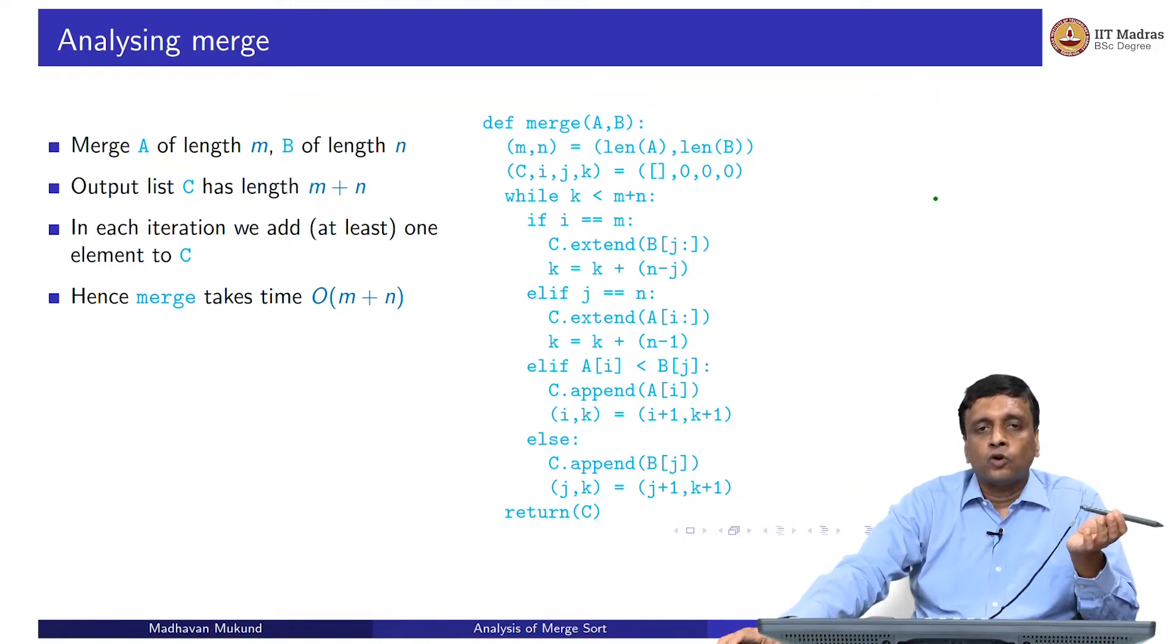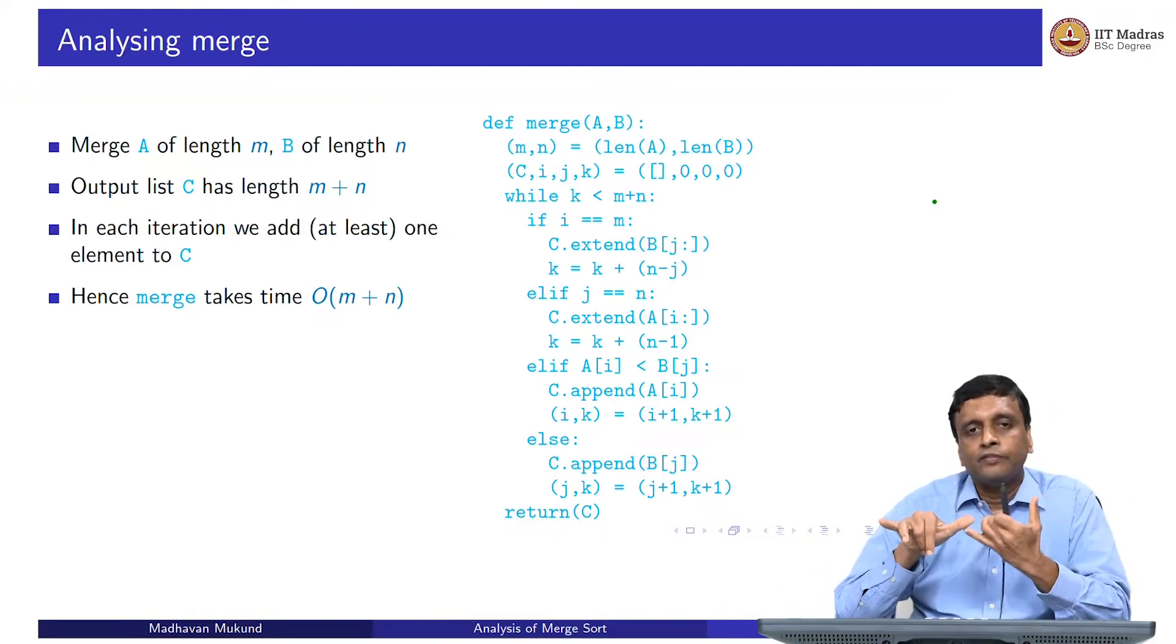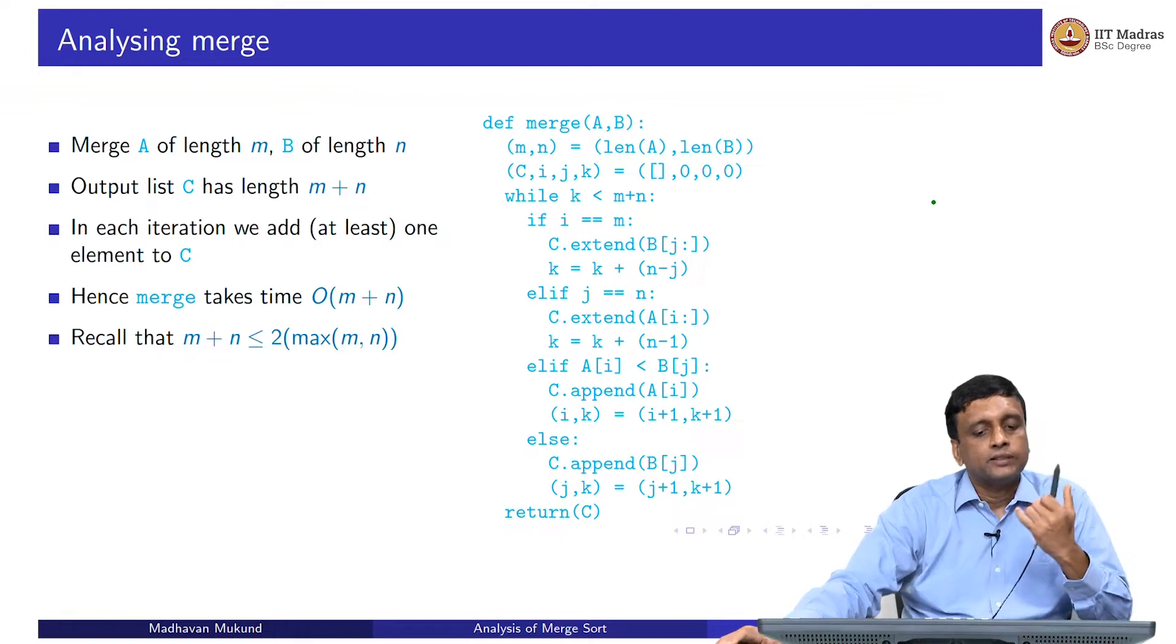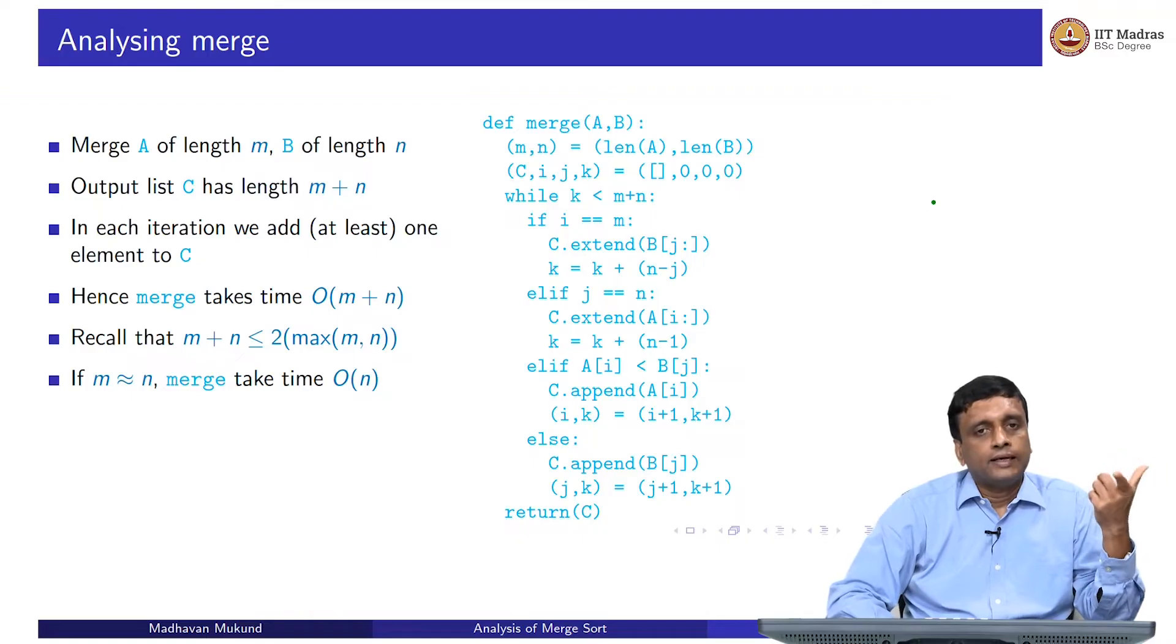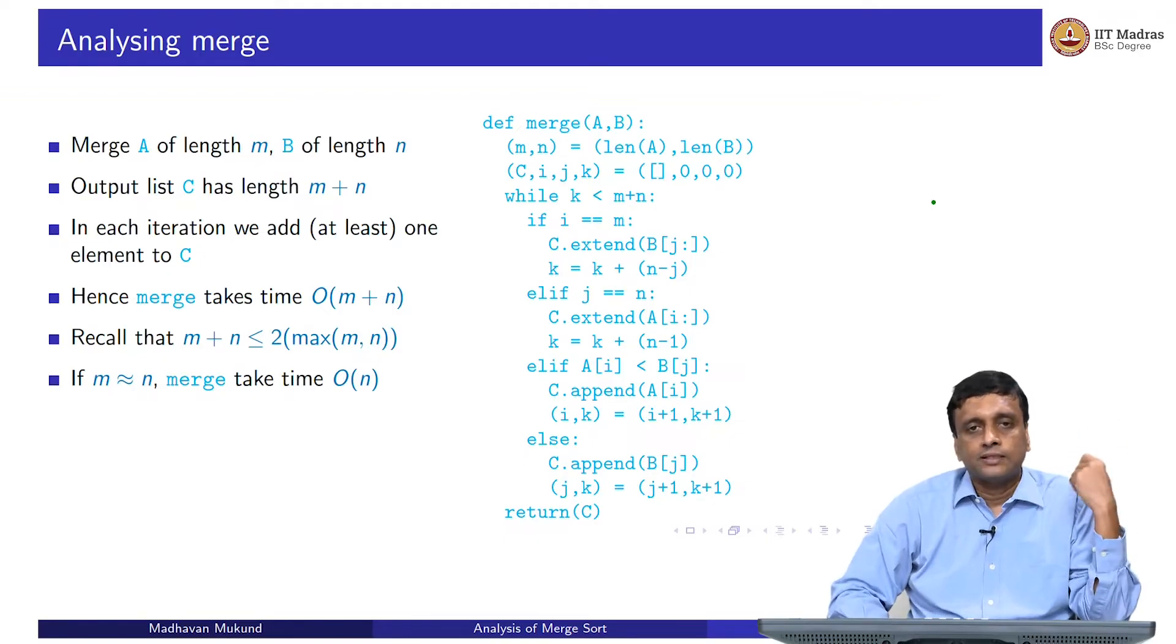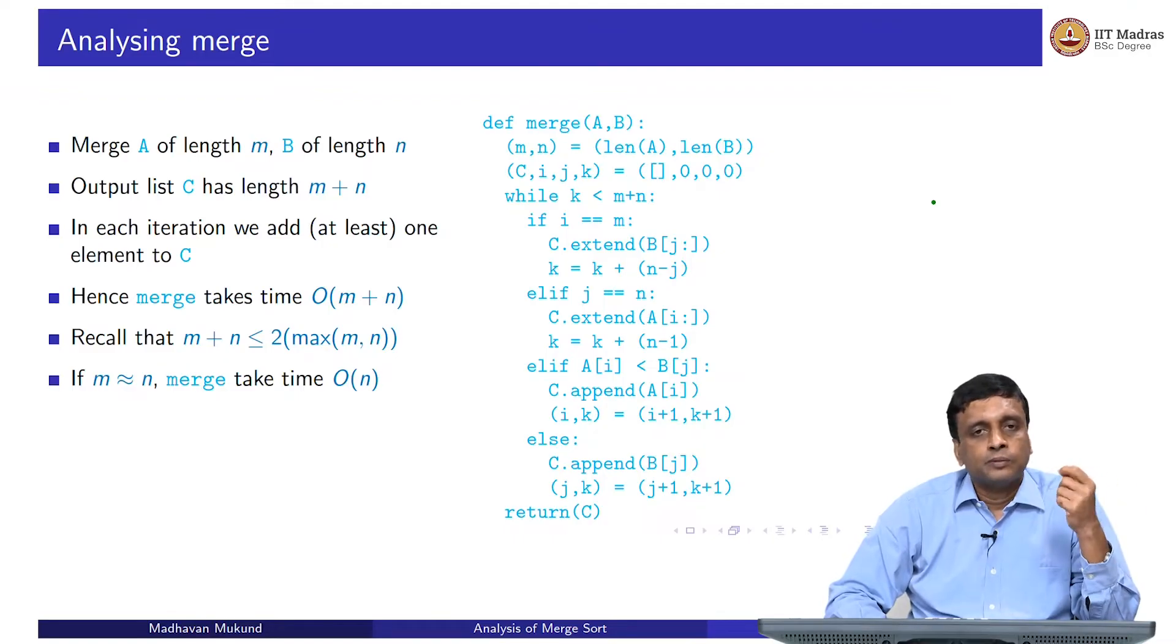Now, in a situation like merge sort, we are applying merge in a special case where the two lists are almost the same size because we are doing half and half. Even if it is not exactly half because there is an odd number of elements or something, they are roughly the same. So we are looking at a situation where m is approximately equal to n. And we have seen before that if I take m plus n, it is going to be less than 2 times the maximum.